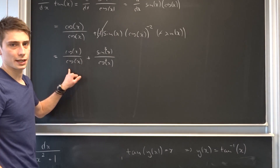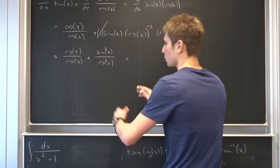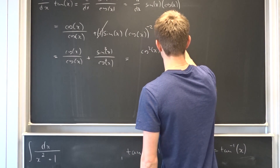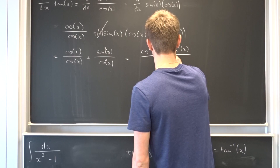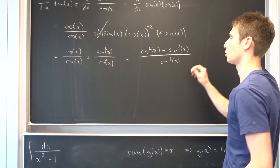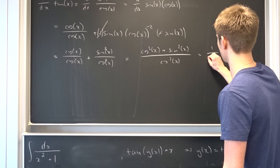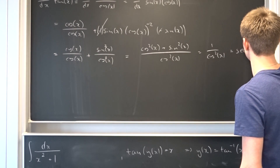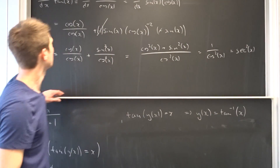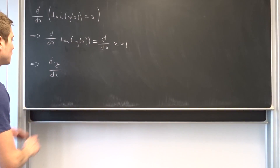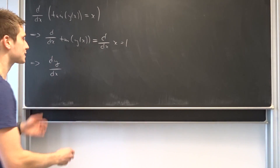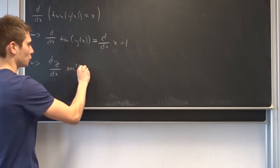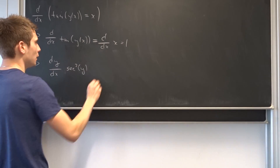We can expand the first fraction by multiplying cosine over cosine and add the terms together, giving cosine squared x plus sine squared x over cosine squared x. By the Pythagorean identity this numerator is 1, so we get 1 over cosine squared x, which is secant squared x. This is the derivative of tangent of x. Plugging this back in: dy/dx times secant squared of y equals 1.